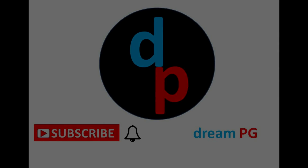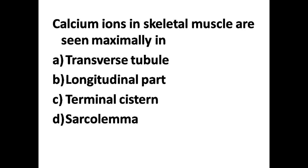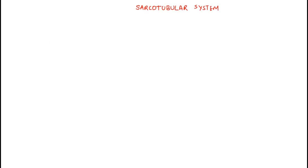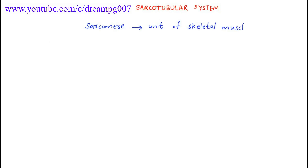Calcium ions in skeletal muscles are maximally seen in: option A - transverse tubules, option B - longitudinal part, option C - terminal cistern, option D - sarcolemma. The sarcomere is the functional unit of skeletal muscle. The cytoplasm of the sarcomere is called sarcoplasm.